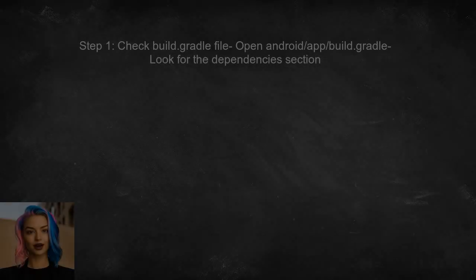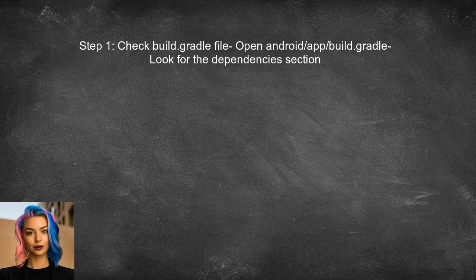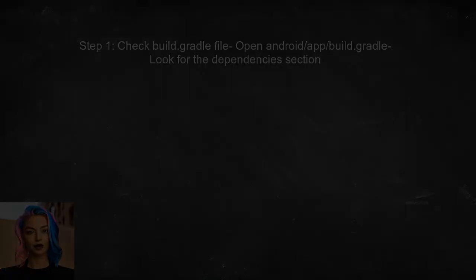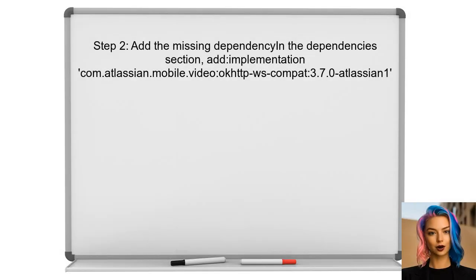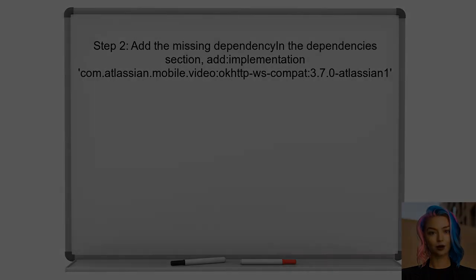To address the dependency error, the user should first check their project's build.gradle file. This file is crucial for managing dependencies in a React Native project. Next, ensure that the required dependency for okhttp-ws-compat is included. If it's missing, you can add it manually to the dependencies section.